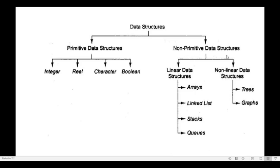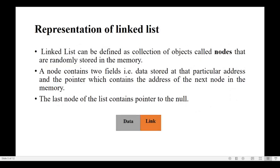Linked list is a linear data structure under non-primitive data structures, where all elements are stored in a linear order. In linked list we have three types: single linked list, doubly linked list, and circular linked list. A linked list is a collection of objects, and these objects are nothing but nodes.